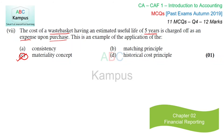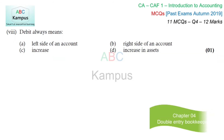Debit always means — yes, debit is always recorded on the left side of an account, which is correct. It is not recorded on the right side. However, debit does not always mean increase — when a liability decreases, it is also debited. So decrease can also be a debit. 'Debit always means increase in asset' is also not always true — debit may mean a decrease in liabilities or an increase in expenses as well.